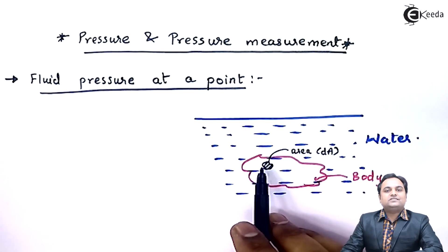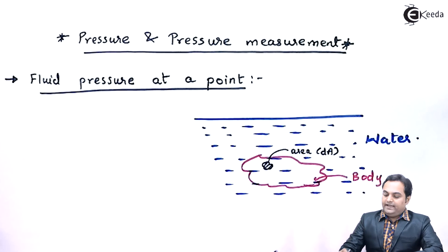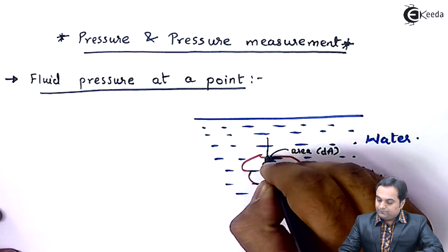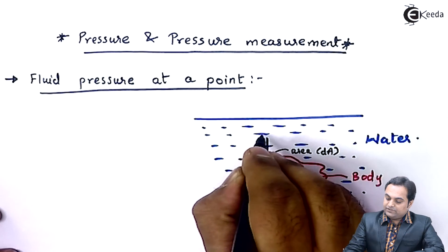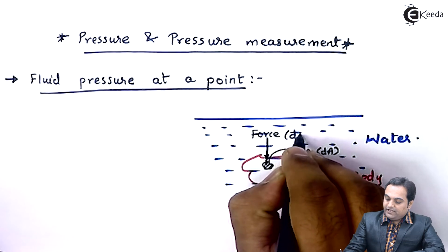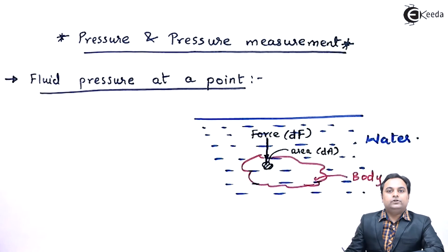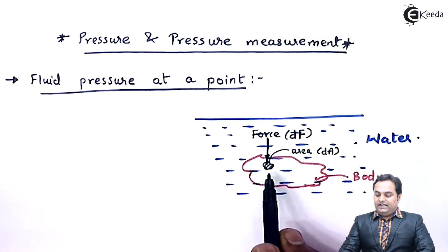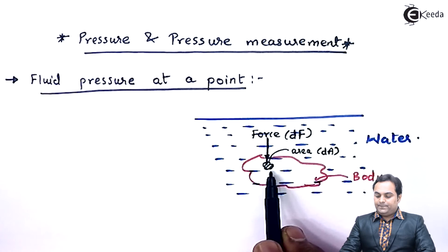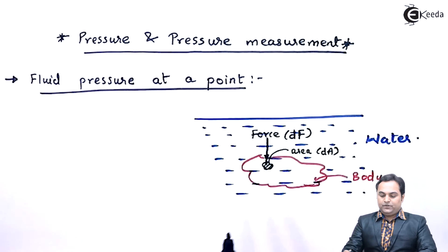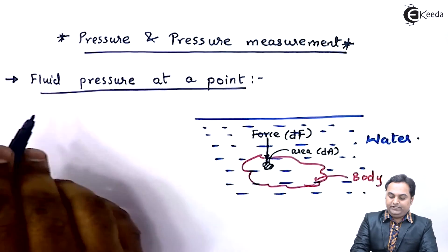Over this small amount of area, a small force would be acting. That force I am denoting here, it is denoted by Force dF. So now when a force dF acts on an area dA, that would be called as intensity of pressure.